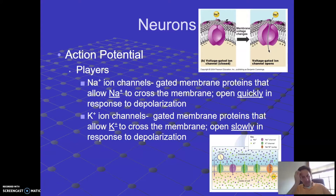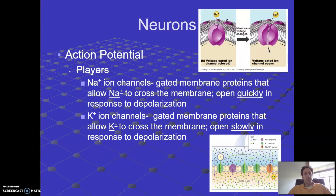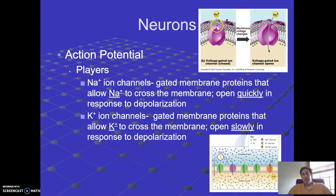This gets kind of complicated, so hang in there. I want to start with what I call the players in the process — introducing some molecules involved. Two players: sodium ion channels and potassium ion channels. Both of these are what we call gated membrane proteins. There's a little gate, a door, on these proteins, and normally these doors are closed, but we can prompt them to open to allow the particular ion to pass through.